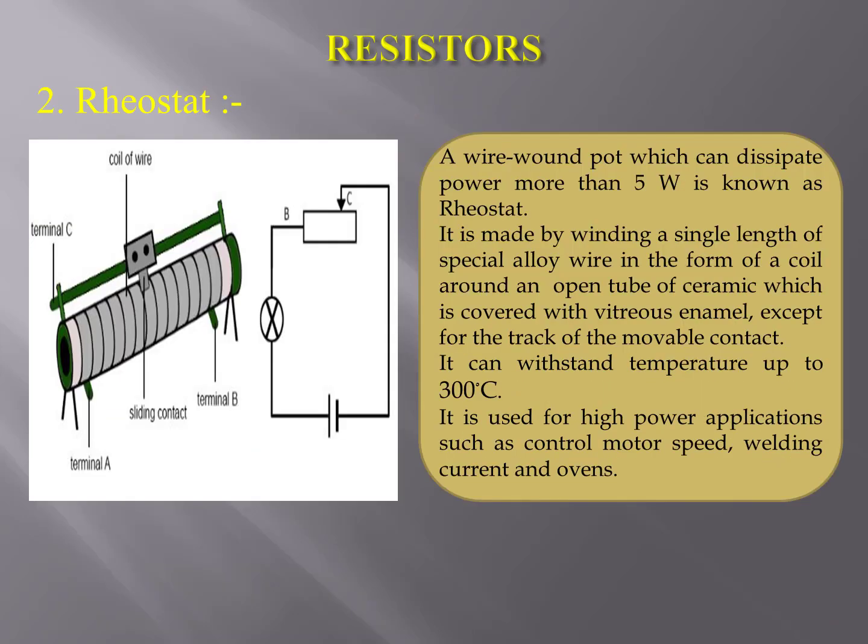Rheostat: a wire wound pot which can dissipate power more than 5 Watts is known as a rheostat. It is made by winding a single length of special alloy wire in the form of a coil around an open tube of ceramic covered with vitreous enamel. It can withstand temperatures up to 300 degrees Celsius and is used for high power applications such as controlling motor speed, welding current, and ovens.